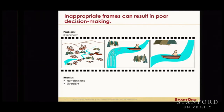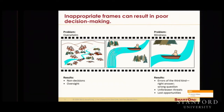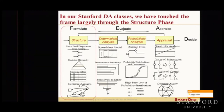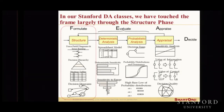You've seen this in the problem session slides — the issue of being overwhelmed by a frame, and the problem of blindness where you don't really see what's in front of you. You want to get the appropriate frame. We've also seen the formulate, evaluate, and appraise model. Mostly we touch framing in the structuring phase — this is really the engineer's view of the world. What we're trying to do is figure out enough of the frame so we can start to model it.